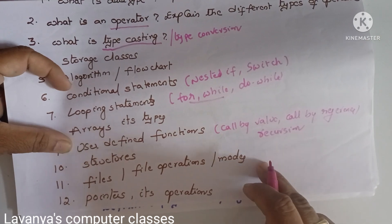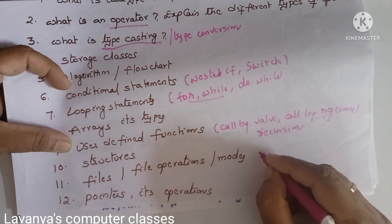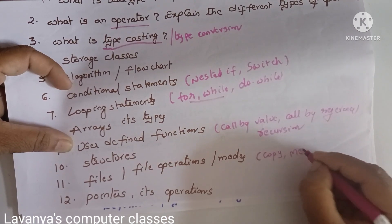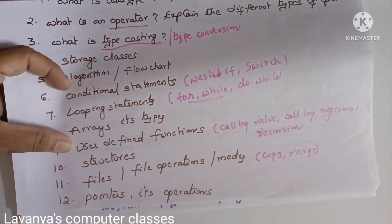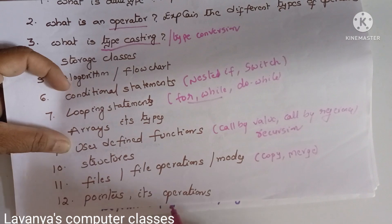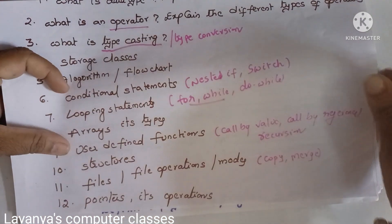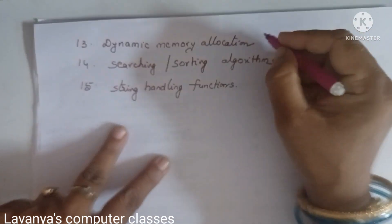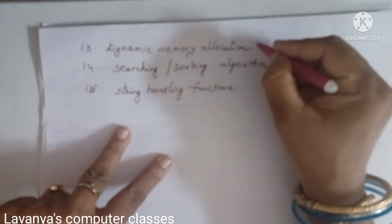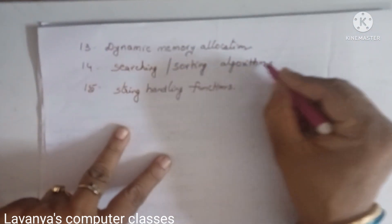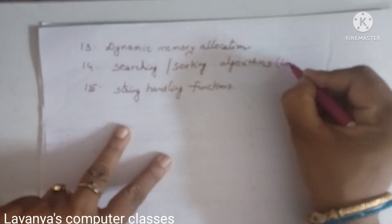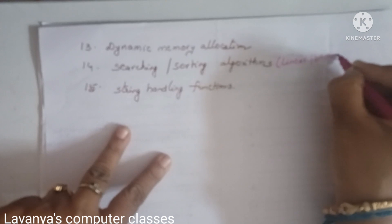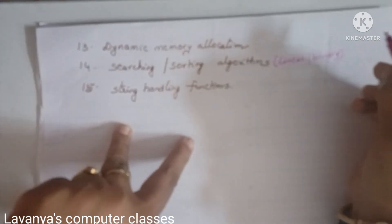Two programs are very important in the file concept: first, copying the content of one file into another file; second, merging files. Next is pointers and its operations. Dynamic memory allocation is also an important theory question.